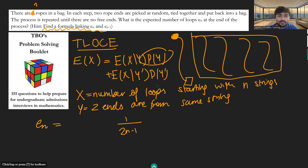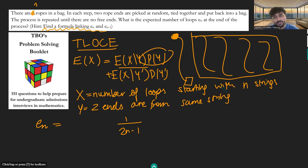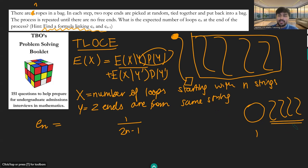The expected value of X given Y is the expected total number of loops given that the first two ends are from the same piece of string. If I've drawn five strands and I connect two ends from the same strand, I get one loop and then have four strands of spaghetti left. I've already got one loop guaranteed, and the expected number from the remaining strands is precisely En minus 1. So the expected value given Y is 1 plus En minus 1.